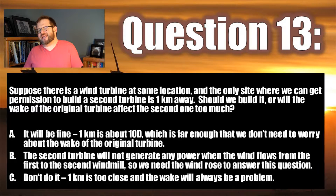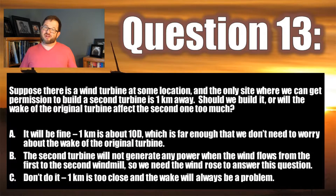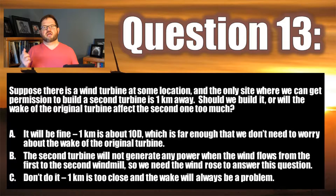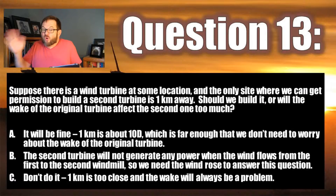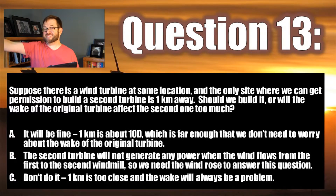I think question A is the right choice here. See, a kilometer doesn't sound all that far apart, but it's actually at least 10 rotor diameters away. The actual impact of the upstream turbine on the downstream one is not going to be that much. Plus, it's only going to be a factor at all when the wind just happens to be in that one direction so that one rotor is downwind to the other.